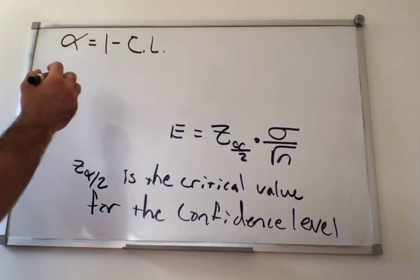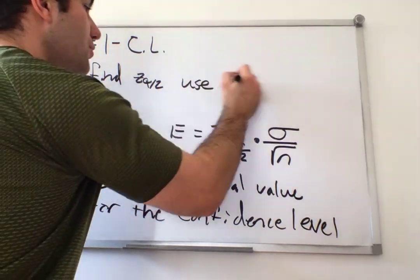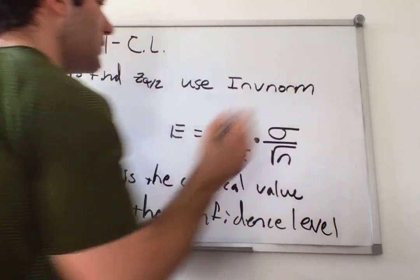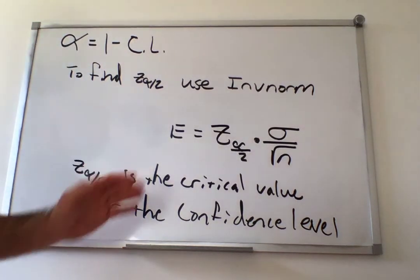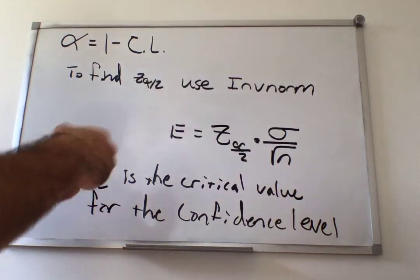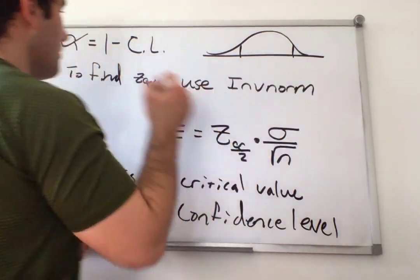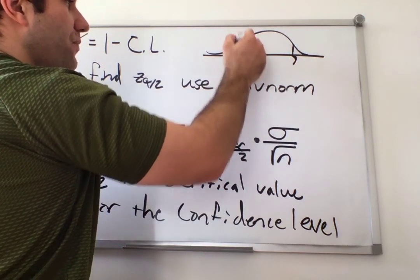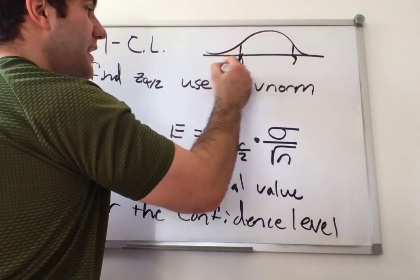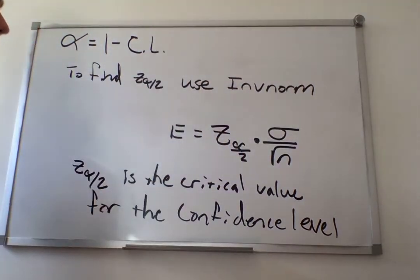To find z alpha divided by 2, use inverse norm. What we're doing here is these are called critical numbers because they're at the very end of the area you're looking at. If I were to draw a normal distribution, a confidence interval is a range of numbers — we're at one end range, we're at the other range. You want the extreme z values right there.